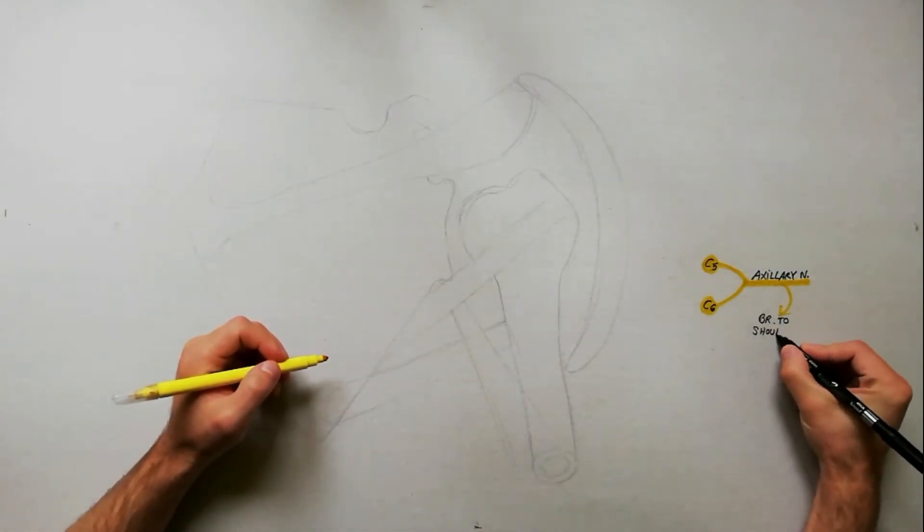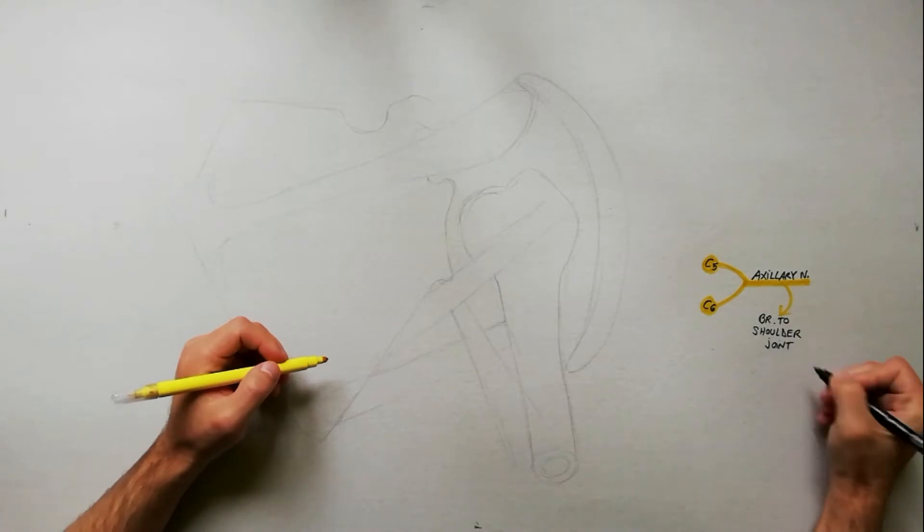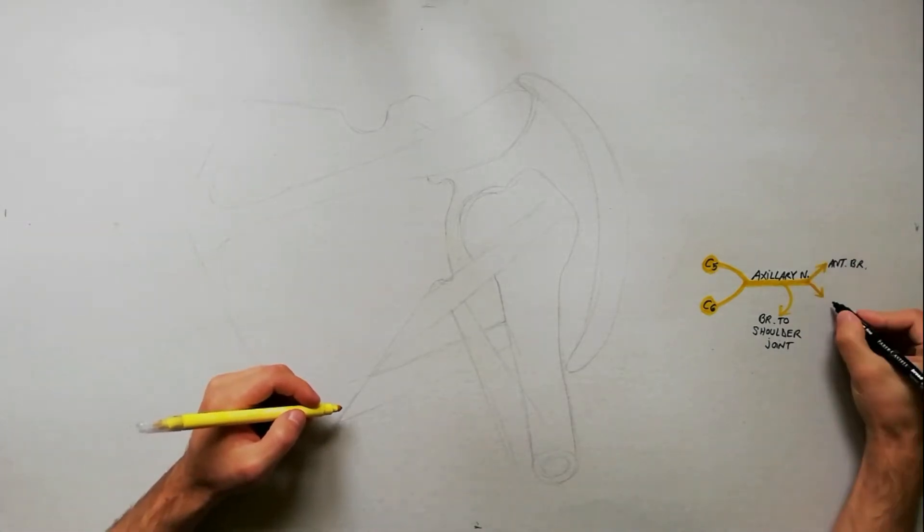After giving a branch to the shoulder joint, it divides into an anterior branch and a posterior branch.